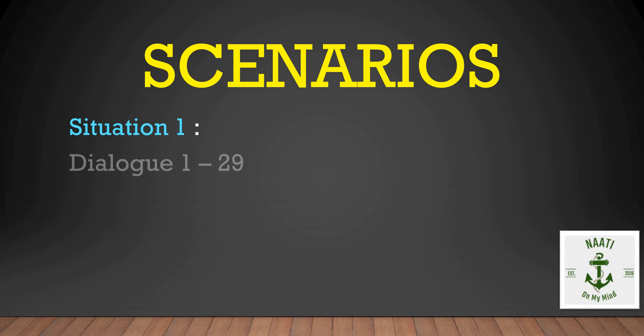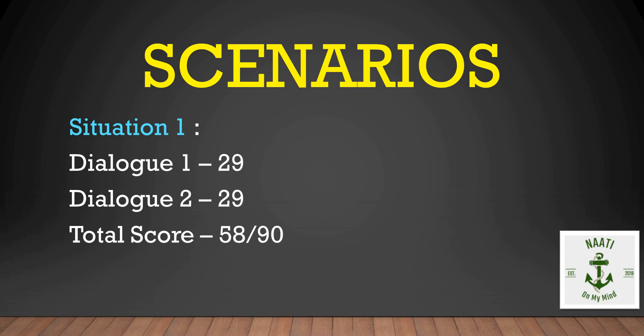In the first situation, in dialogue 1 the candidate scored 29 and in dialogue 2 the candidate scored 29. According to the marking criteria he has cleared both dialogues, but his total score is 58 out of 90. The final result is a marginal fail because even though he scored the minimum required marks in each dialogue, his total has not reached 63.